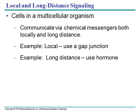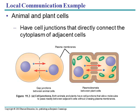For long-distance communication, we're talking about things like hormones. Here's an example of a gap junction — you can see in these arrows that these cells are directly connected to one another. There are holes within the cell membrane, and their cytoplasm can freely exchange material. Plant cells also have gap junctions, but because they have a cell wall to deal with, we use a new vocabulary term: plasmodesmata.